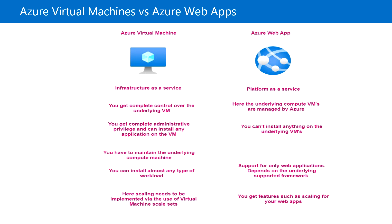When we want to host a web application, we need to decide whether to choose Azure virtual machine or Azure web app. We need to make sure the web application we are going to host supports Azure web app, which is the PaaS service. If there is any dependency that isn't supported, then we need to choose the Azure virtual machine instead.